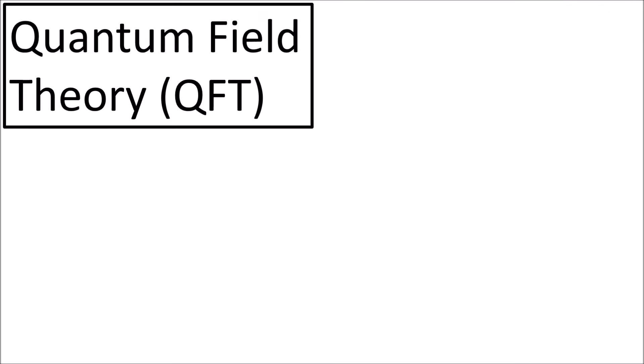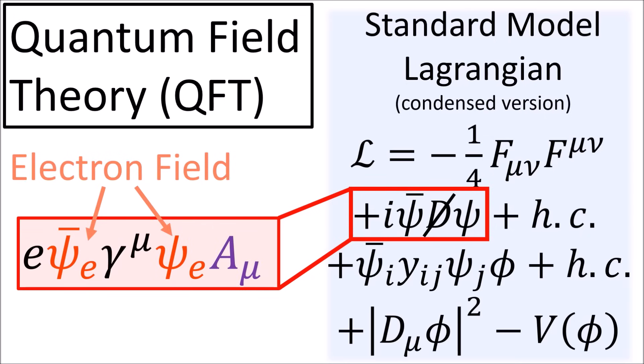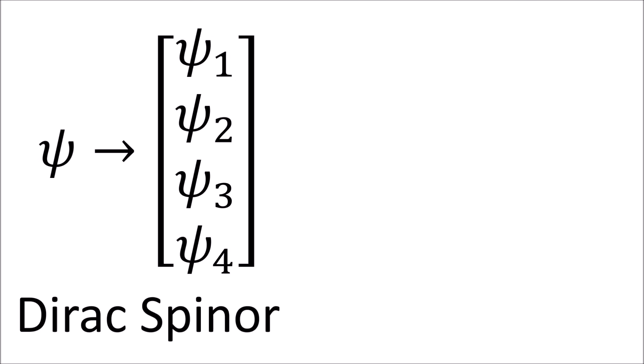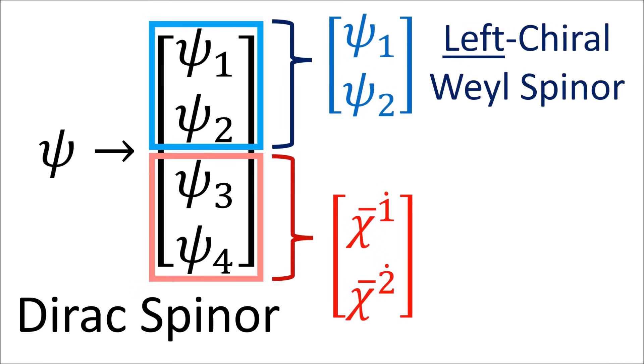The study of these fields is called quantum field theory, or QFT, and the interactions between these various fields are modeled by an enormous formula called the standard model Lagrangian. Any terms in this formula that contain a pair of fields represent an interaction between those fields. For example, this term represents the electron spinor field interacting with the photon vector field. Spinors in quantum field theory are four component columns called Dirac spinors, which are really a pair of two component Weyl spinors, one having left-handed chirality and the other having right-handed chirality.